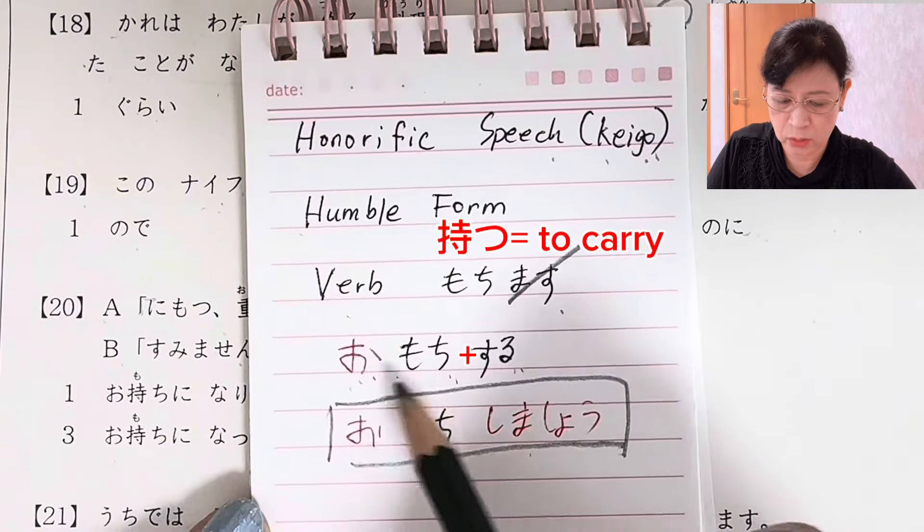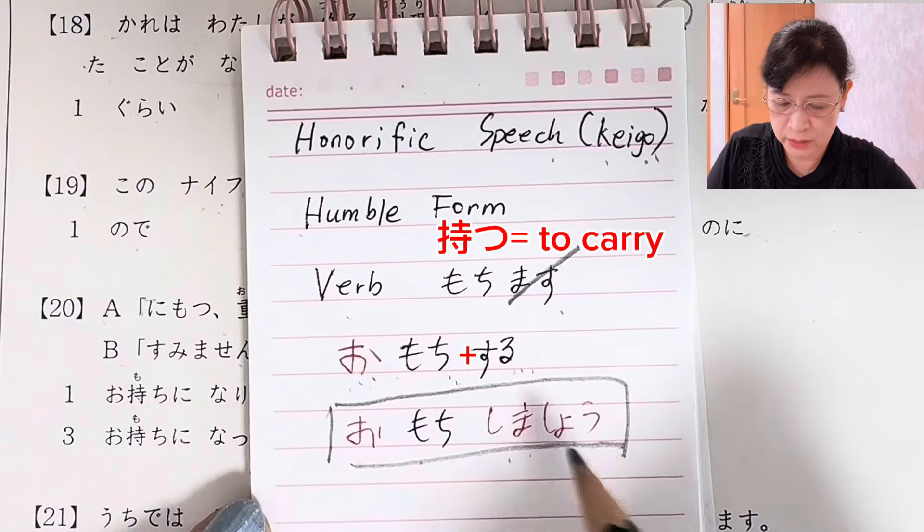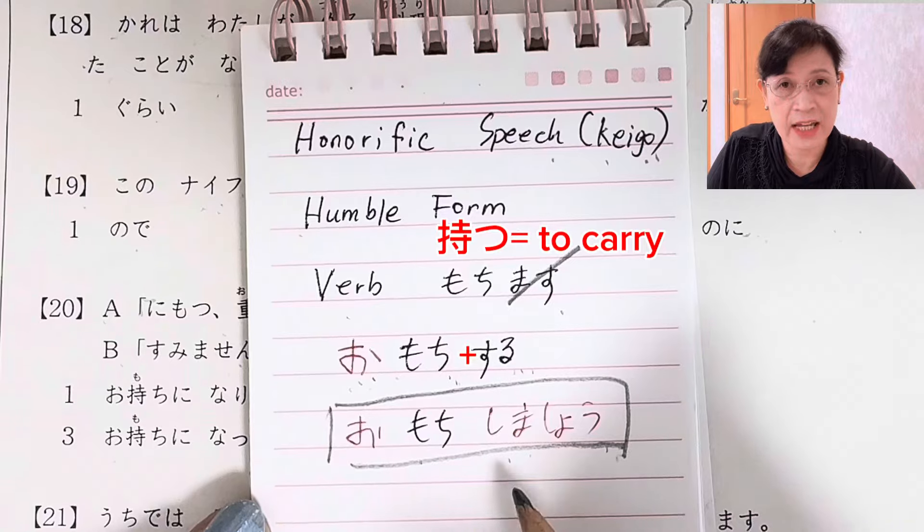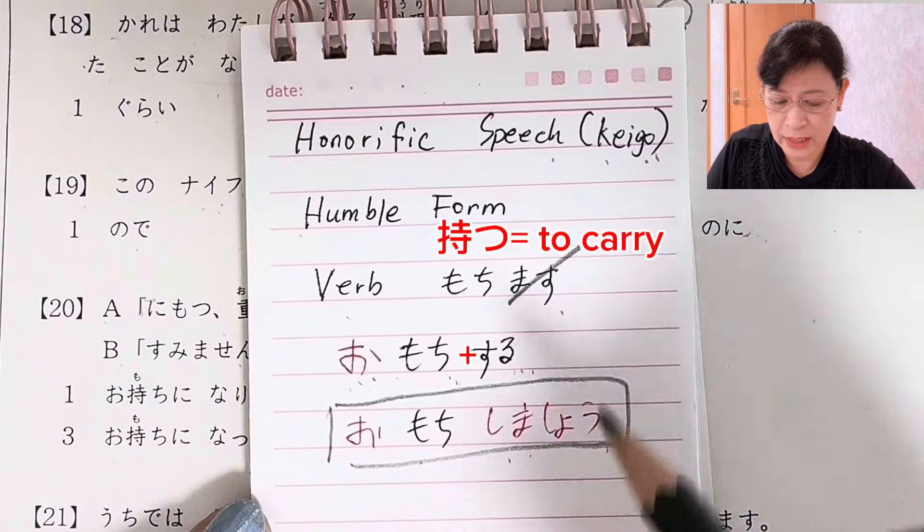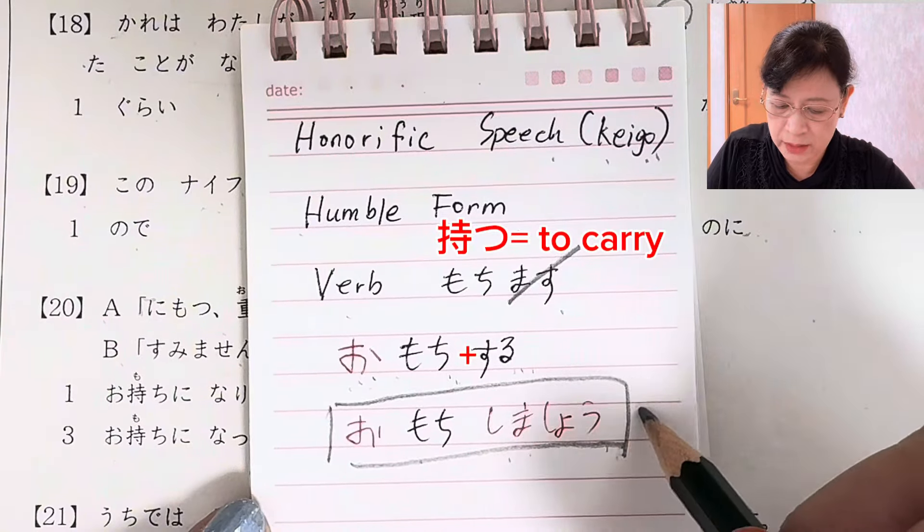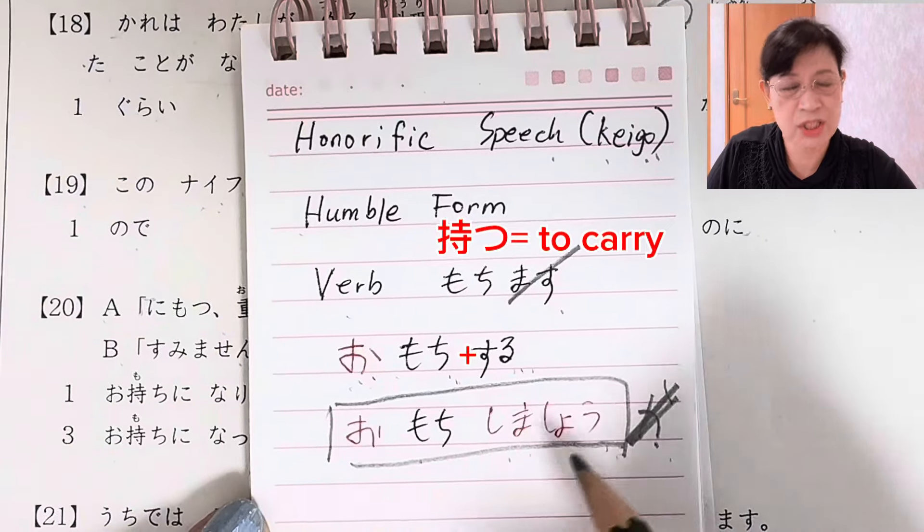This is how to make it. We add お, take away ます here, so it will be 持ち、お持ち, and する - お持ちする. But we have お持ちしましょう. This grammar point しましょう means 'shall I carry it for you?' And sometimes we also could add here お持ちしましょうか - shall I carry it for you? But we don't have か. It's not a question, it's an offer to carry the luggage.